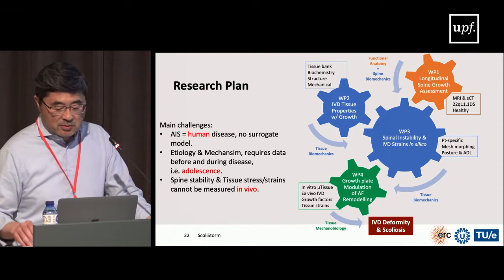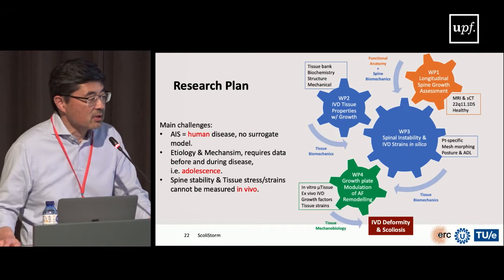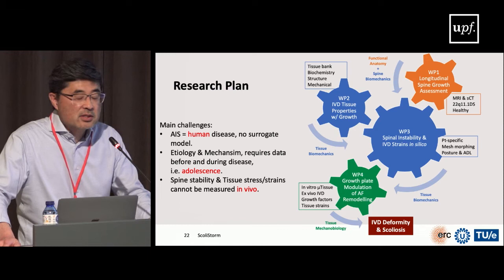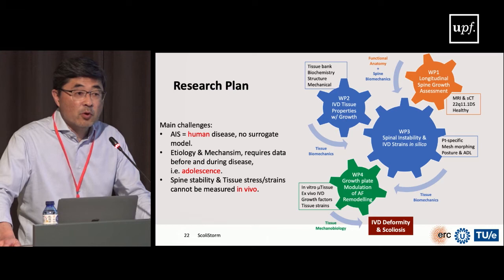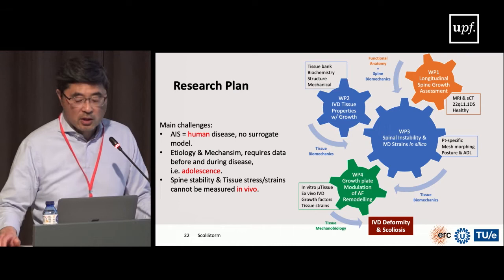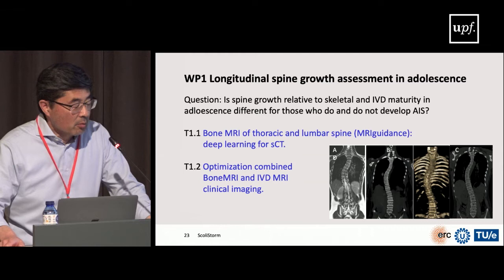The project is divided into four work packages: one involves longitudinal monitoring of growth; another looks at spinal instability and strains inside the disc; work package three examines tissue properties and how they change with growth; and the last looks at growth plate morphogens and their effect on the growing or remodeling annulus fibrosus.